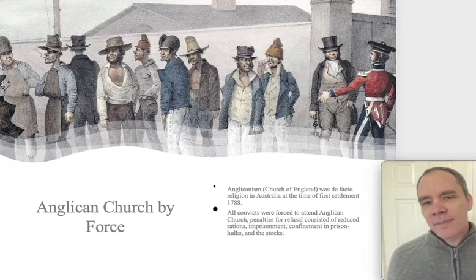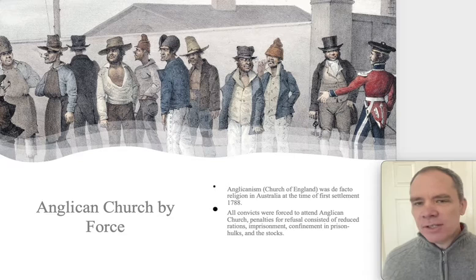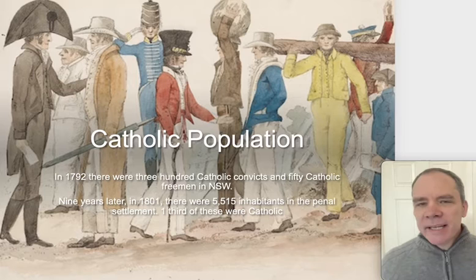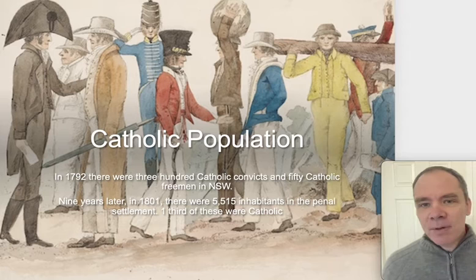Anglican by force. Anglicanism — the Church of England — was the de facto religion in Australia at the time of the first settlement. The church was aligned to the state or government. All convicts were forced to attend the Anglican Church. Penalties for refusal consisted of reduced rations, imprisonment, confinement, imprisoned in hulks, and the stocks. The Catholic population in 1792 numbered 300 Catholic convicts and 50 Catholic freemen in New South Wales. Nine years later in 1801, there were over 5,515 inhabitants in the penal settlement and one third of them were Catholic.